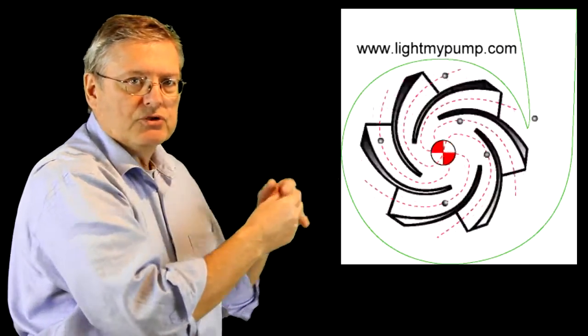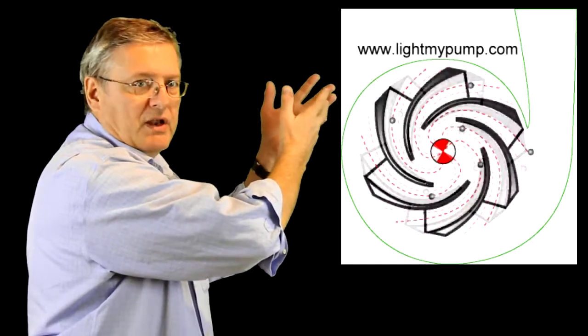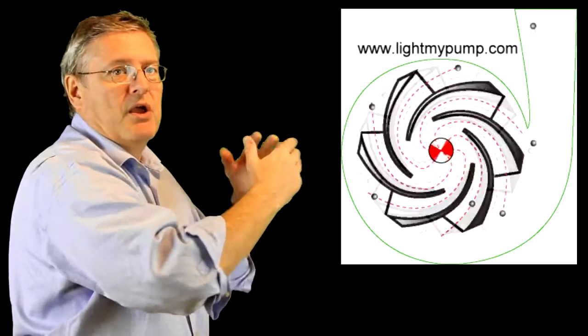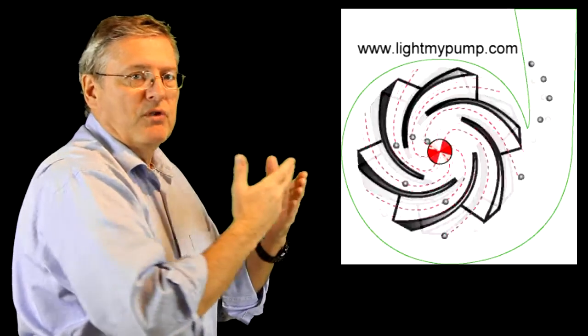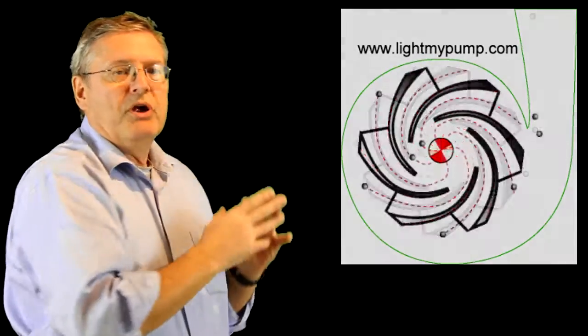The casing gets a little bit bigger, it's got this spiral shape called the volute and its function is to slow the liquid down to create pressure. As we know, if we create velocity energy and we reduce that energy, then it's going to go into pressure energy. So that's how we inject the energy into fluid: we create velocity energy and reduce that energy in the casing to get pressure energy, so we get a nice strong pressure at the discharge of the pump.